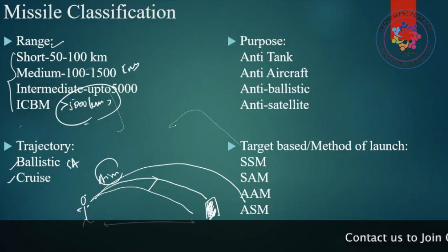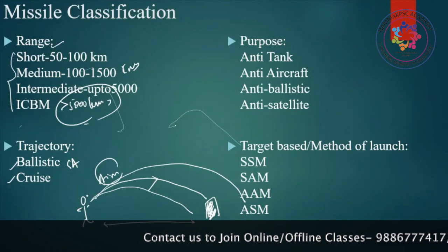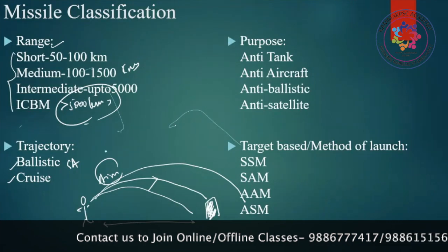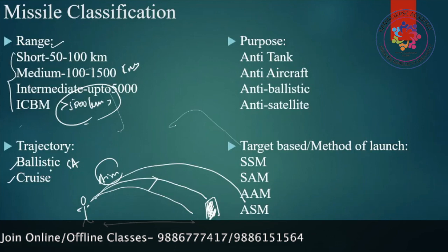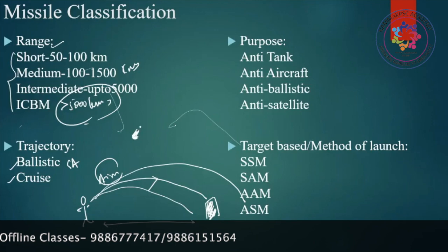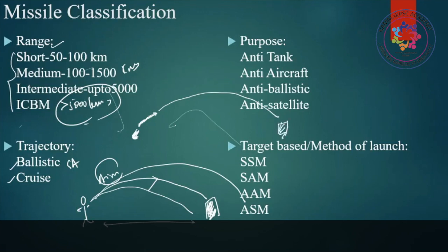A ballistic missile is fired with a rocket engine and has a booster only for a short distance. After that, it follows a projectile motion and you can only hope it will hit the target. It is not powered and does not receive guidance throughout its journey.